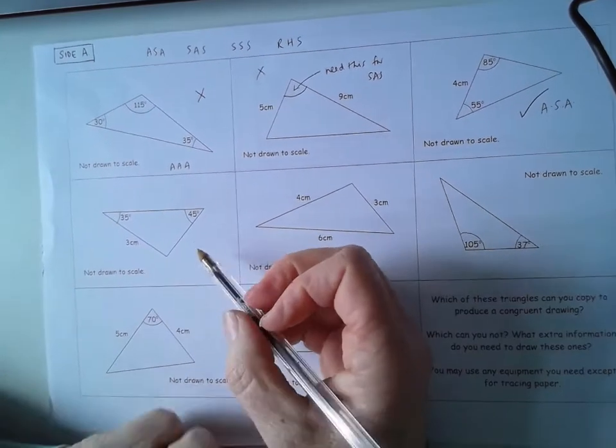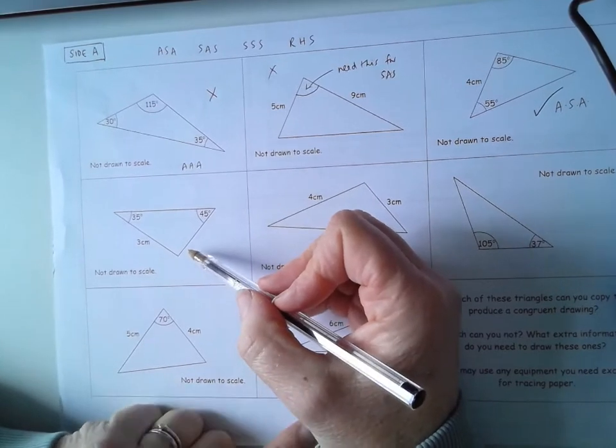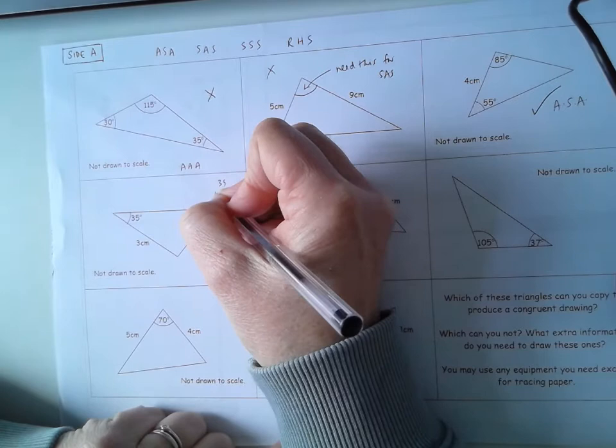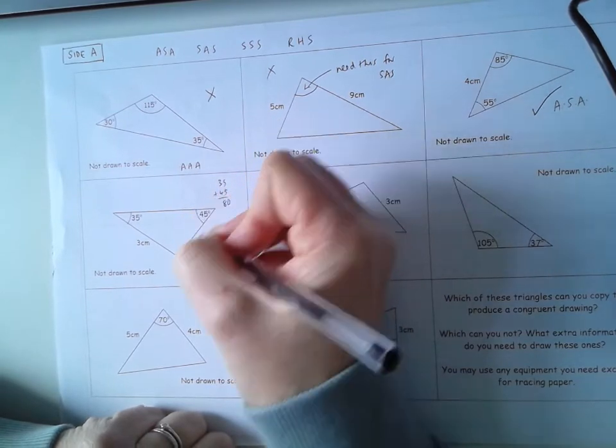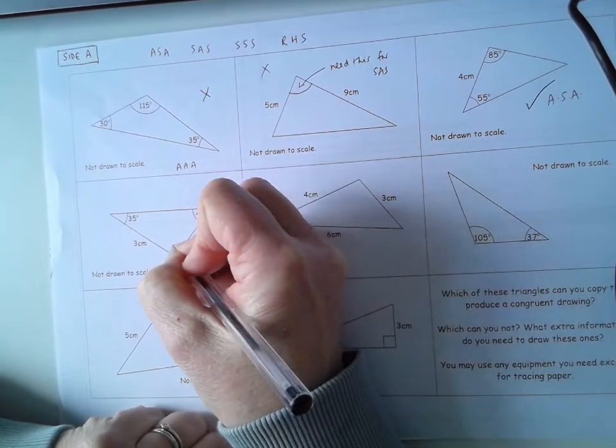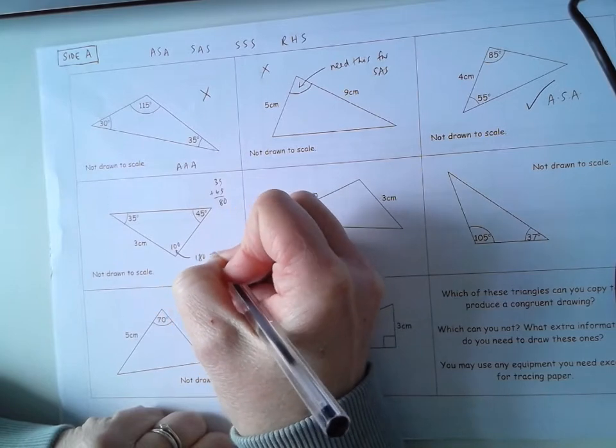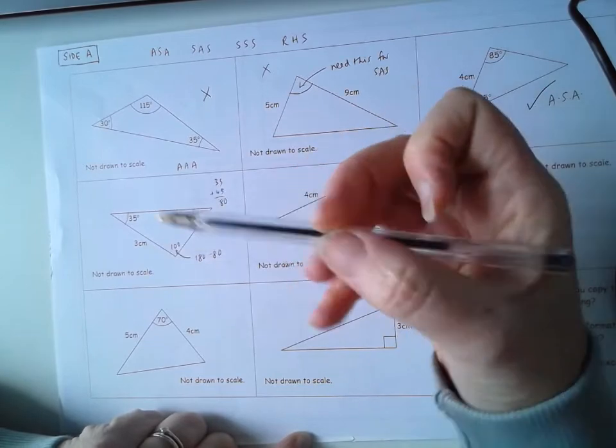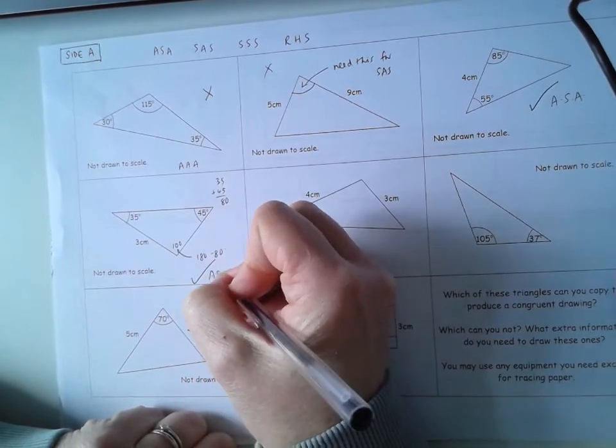What about here? Now this looks like we don't have enough information but if we add these two together we get 80 degrees. So this other angle here must be 100 degrees. 180 minus 80. So now we have angle, side, angle. So yes we can. Angle, side, angle.